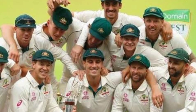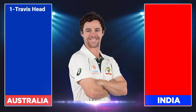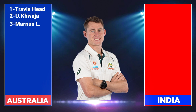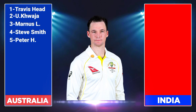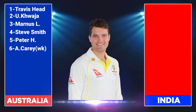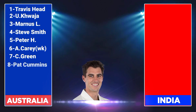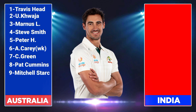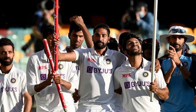Holkar Cricket Stadium, Indore. Team Australia final playing 11 vs India: 1. Travis Head, left-hand batter. 2. Usman Khawaja, left-hand batsman. 3. Marnus Labuschagne, right-hand batsman. 4. Steven Smith, right-hand batsman. 5. Peter Handscomb, right-hand batsman. 6. Alex Carey, left-hand batsman. 7. Cameron Green, all-rounder. 8. Pat Cummins, right-arm. 9. Mitchell Starc, left-arm fast bowler. 10. Nathan Lyon, right-arm off-spinner. 11. Todd Murphy, right-arm off-spinner.